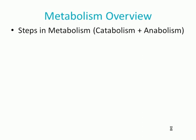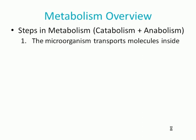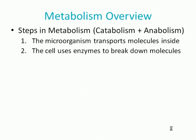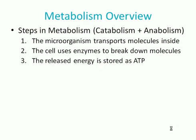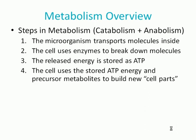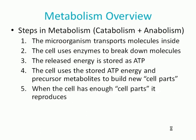This occurs in five basic steps. First, the microorganism needs to transport molecules inside. Then, the cell uses enzymes to break down these molecules. That releases energy and building block pieces, which are called precursor metabolites. The energy is stored as ATP. Then, the cell uses the stored ATP energy and the precursor metabolites to build new cell parts. And then, when it has enough of the pieces to make its cell, it reproduces.